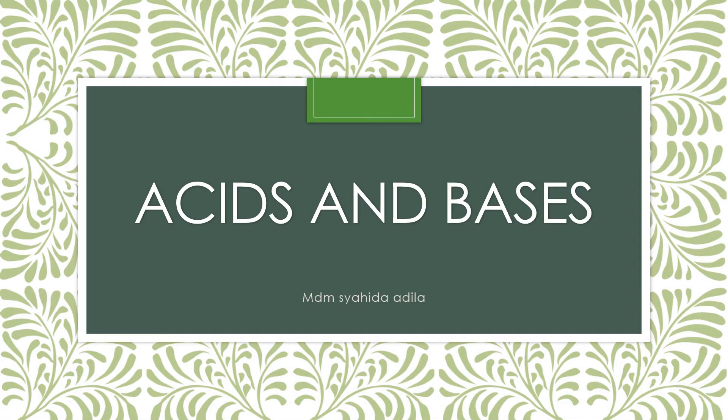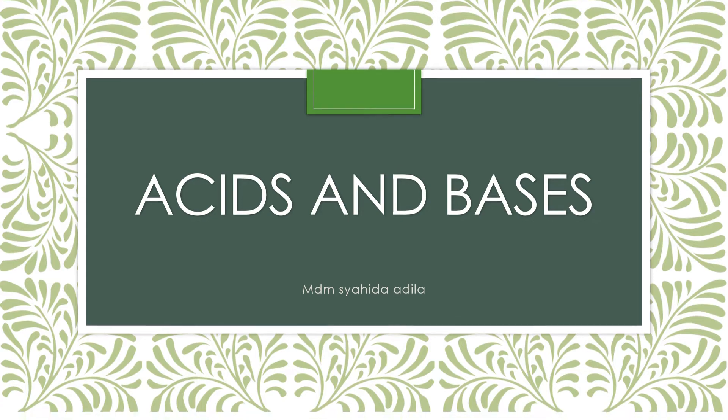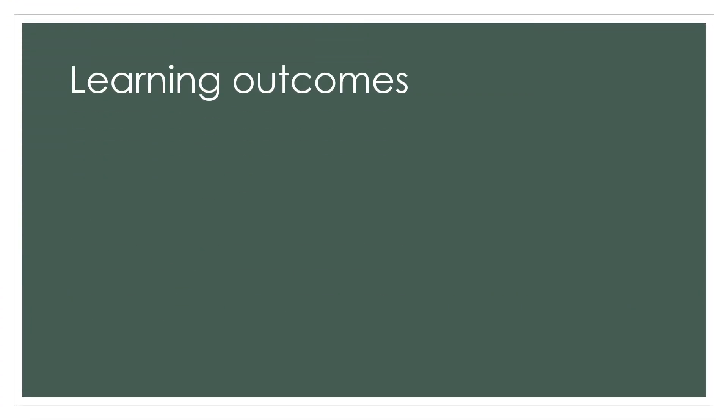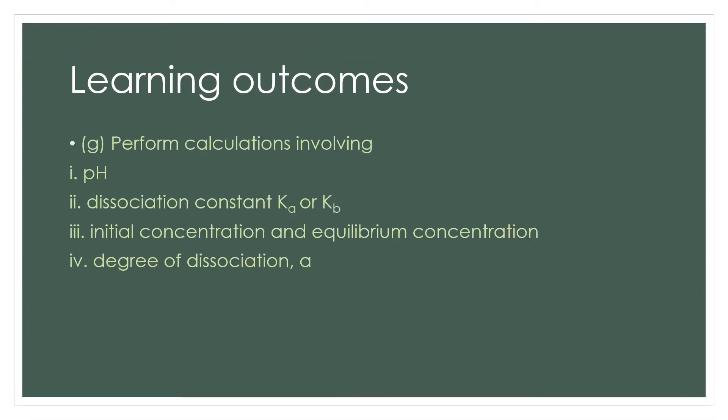Today we're going to cover the next topic, 7.1, outcome G: perform the calculation involving the pH. The equation needed is pH = negative log [H+].